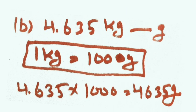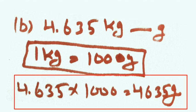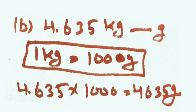Next: 4.635 kilograms — convert into grams. 1 kg equals 1000 grams, so multiply by 1000. How many places does the decimal shift? 3 places ahead. So it will be 4,635 grams.